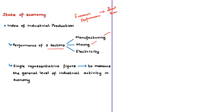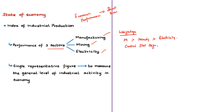For prelims perspective, the weightage in decreasing order is: manufacturing has the highest weightage, then mining, then electricity. The IIP is released by the Central Statistical Organization functioning under the Ministry of Statistics and Programme Implementation. The All India IIP provides a single representative figure to measure the general level of industrial activity in the economy on a monthly basis, free from any price change influences.